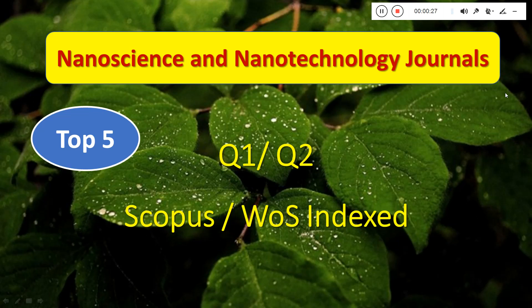This is also very important now. The publications that we publish should be of good reputation, and Quartile 1 and Quartile 2 would be the top reputation for these journals.